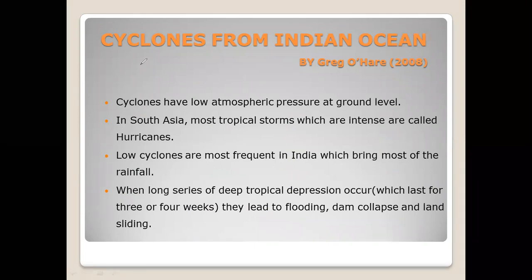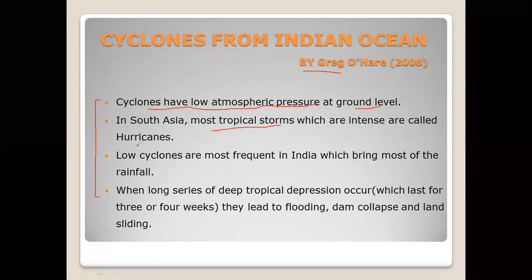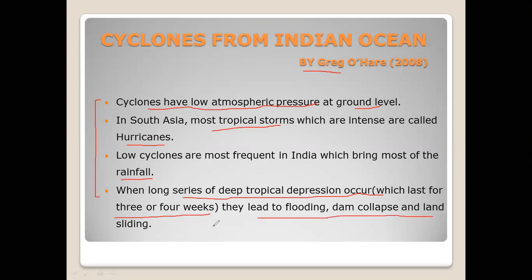Here is a research report from researcher Greg — I have taken only the main points. He tells us that cyclones have low atmospheric pressure at ground level. In South Asia, the most intense tropical storms are called hurricanes. He also mentions that low cyclones are most frequent in India and bring the most rainfall. When long series of deep tropical depressions occur lasting 2 to 4 weeks, they lead to flooding, dam collapse, and landsliding.